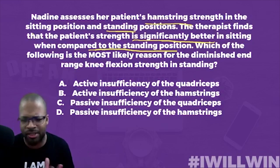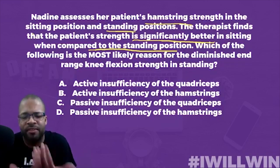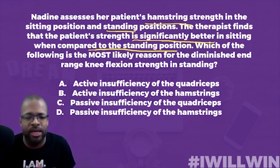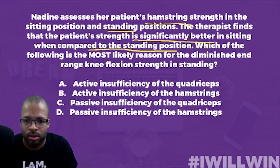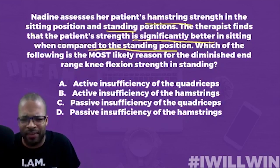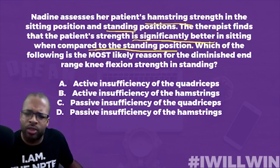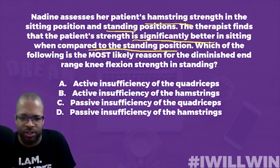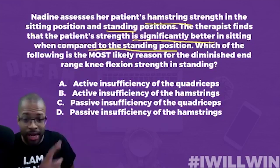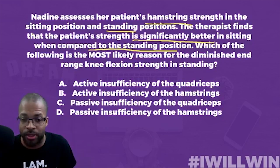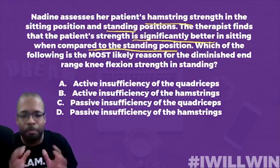Answer D: passive insufficiency of the hamstrings — the inability of a two-joint muscle to lengthen far enough to allow for full range of motion. But when the patient is in standing doing knee flexion, are the hamstrings shortening or lengthening? They're shortening. So it can't be passive insufficiency. If we were going into hip flexion with knee extension — the opposite direction — then we could talk about passive insufficiency of the hamstrings. But not here. D is not correct.